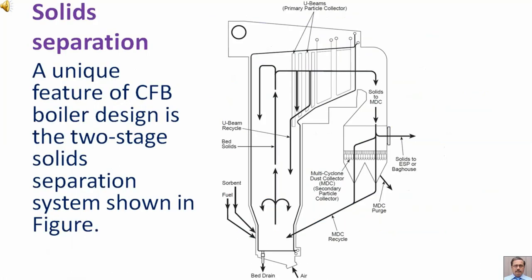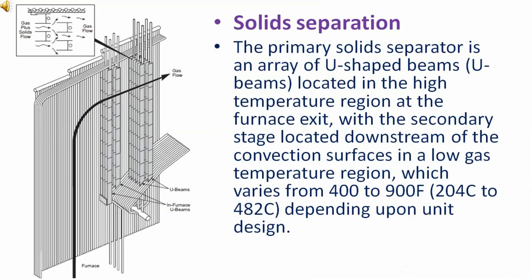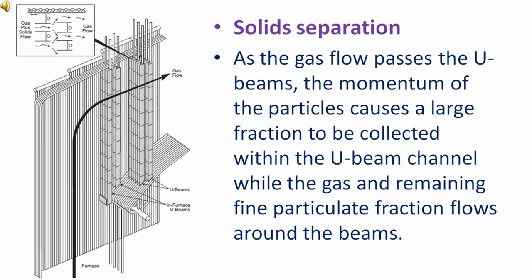Solid separation. A unique feature of circulating fluidized bed boiler design is the two-stage solid separation system shown in figure. The primary solid separator is an area of U-shaped beams, that is U-beams, located in the high temperature region at the furnace exit, with the secondary stage located downstream of the convection surfaces in a low gas temperature region which varies from 400 to 900 Fahrenheit depending upon unit design.